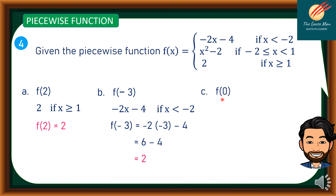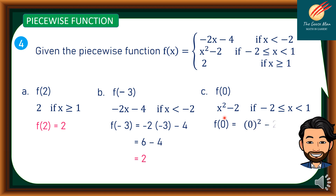For f(0): x = 0 falls in the domain -2 ≤ x < 1, so we use f(x) = x² - 2. Substituting: 0² - 2 = 0 - 2 = -2. Therefore f(0) = -2.